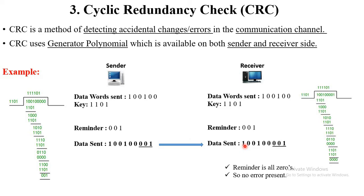The receiver receives the message and checks the remainder present at the end. They also access the information through the particular key, and then again perform the generator polynomial method at the receiver side — dividing by 1 1 0 1. After the division, if all remainders are 0, it means there are no errors on the receiver side. So this is called Cyclic Redundancy Check. In this way the sender sends accurate information and the receiver confirms correct receipt.